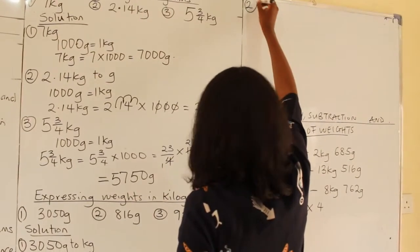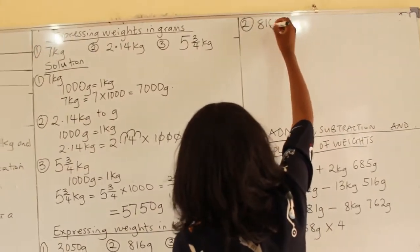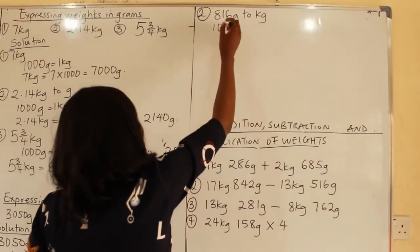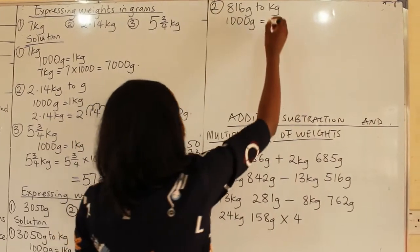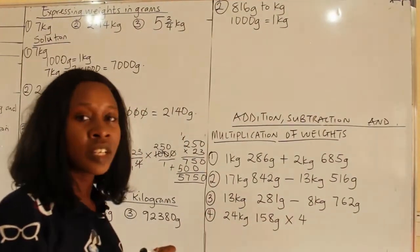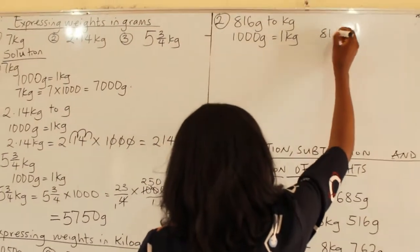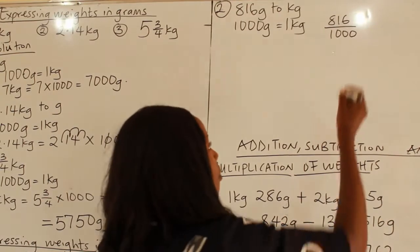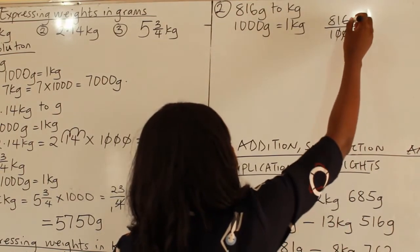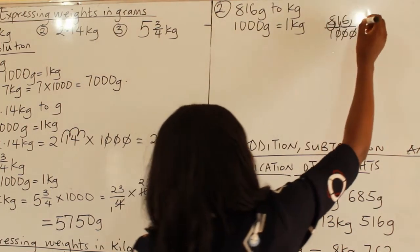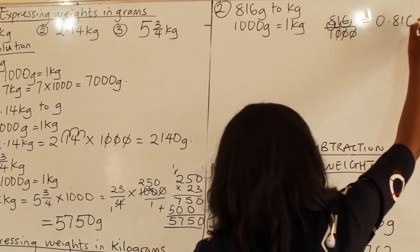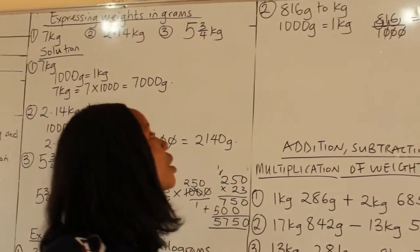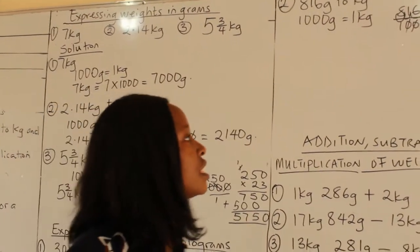The second question: 816 grams to kilograms. The relationship is 1,000 grams equals 1 kilogram. So 816 divided by 1,000 — we move the decimal point three places to the left — gives 0.816 kilogram.